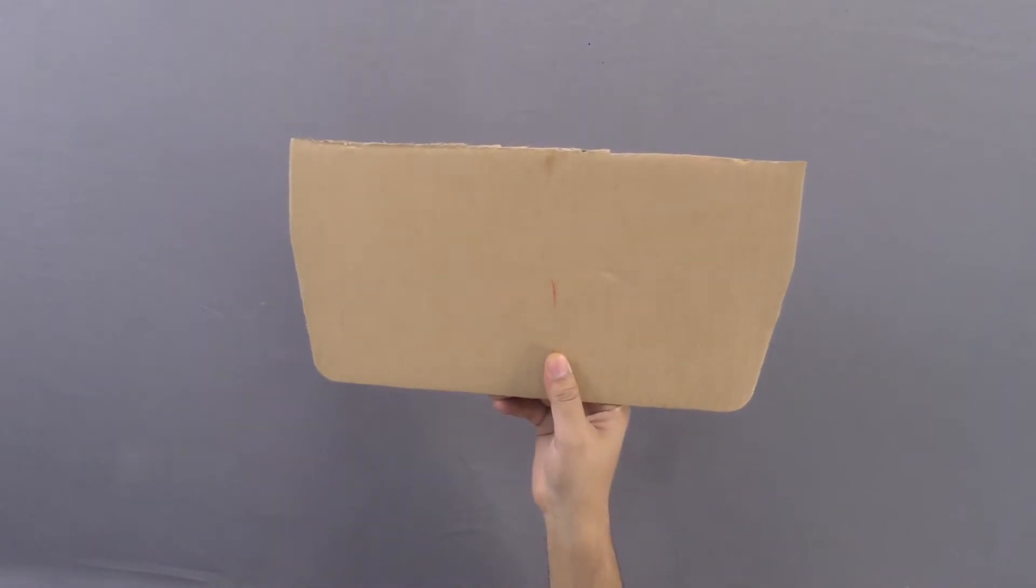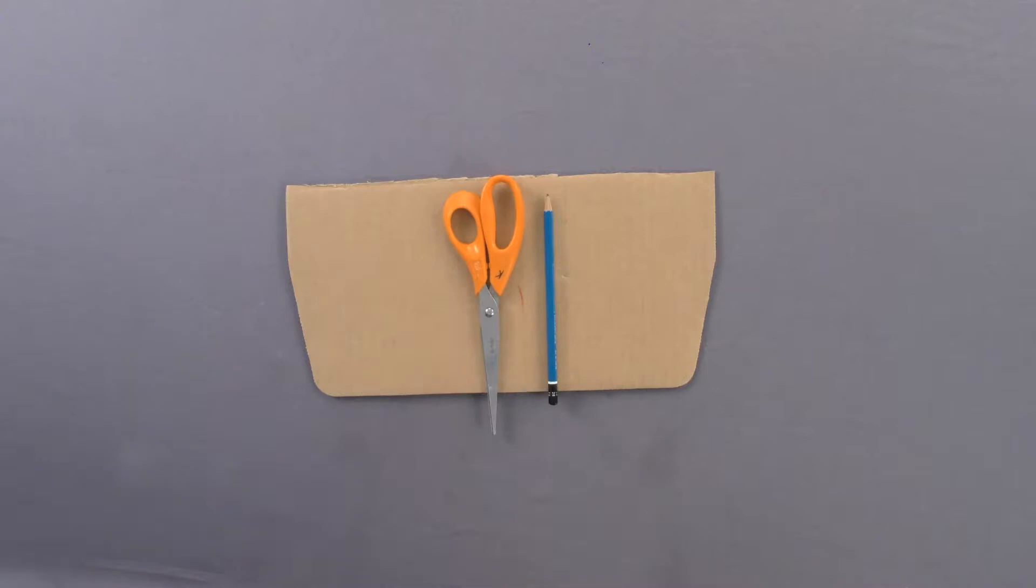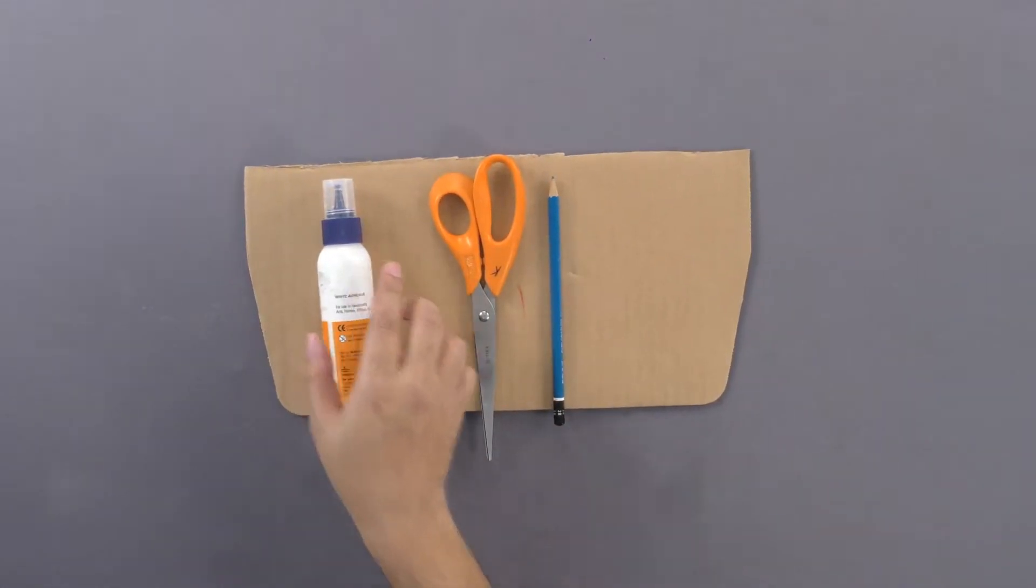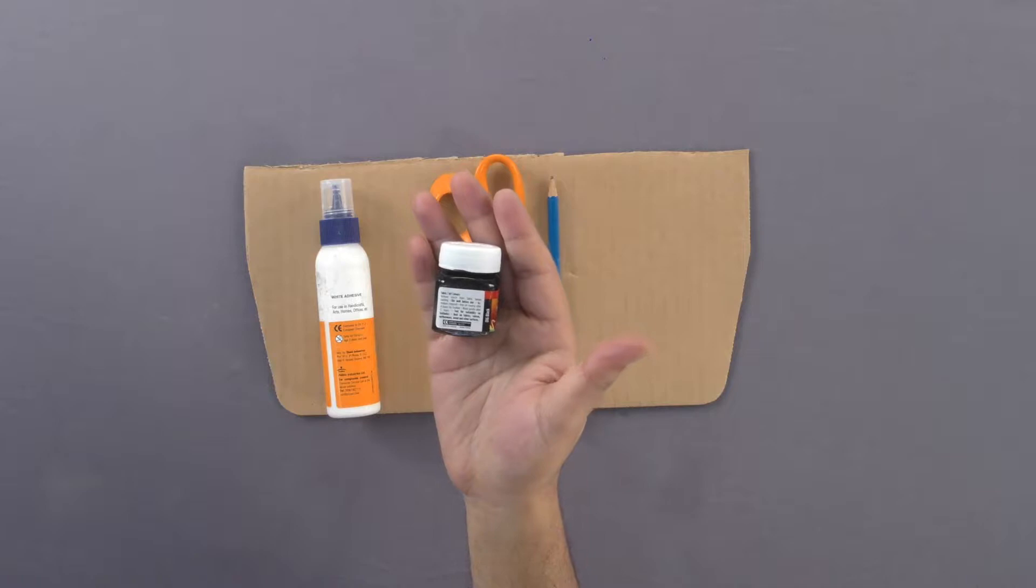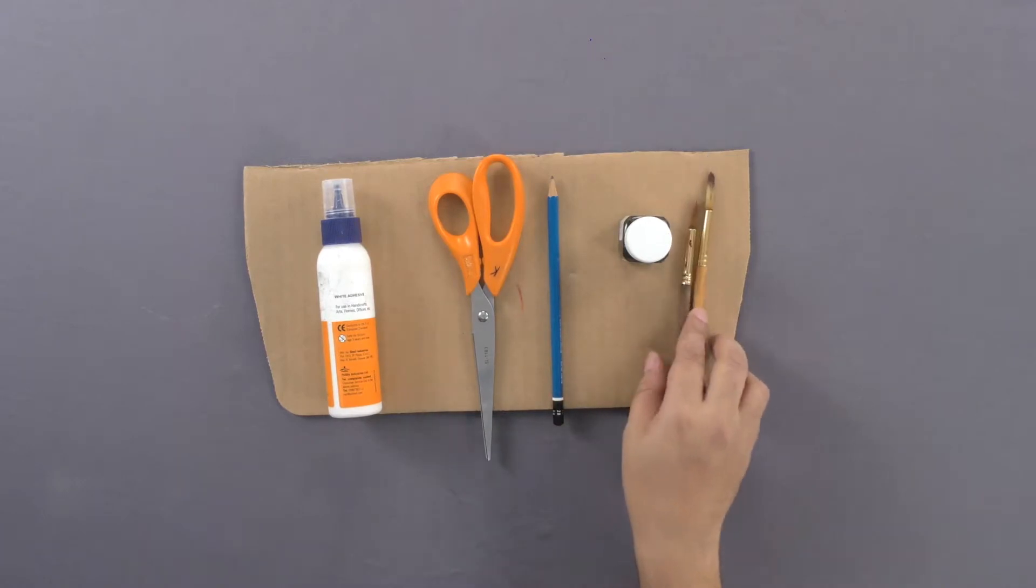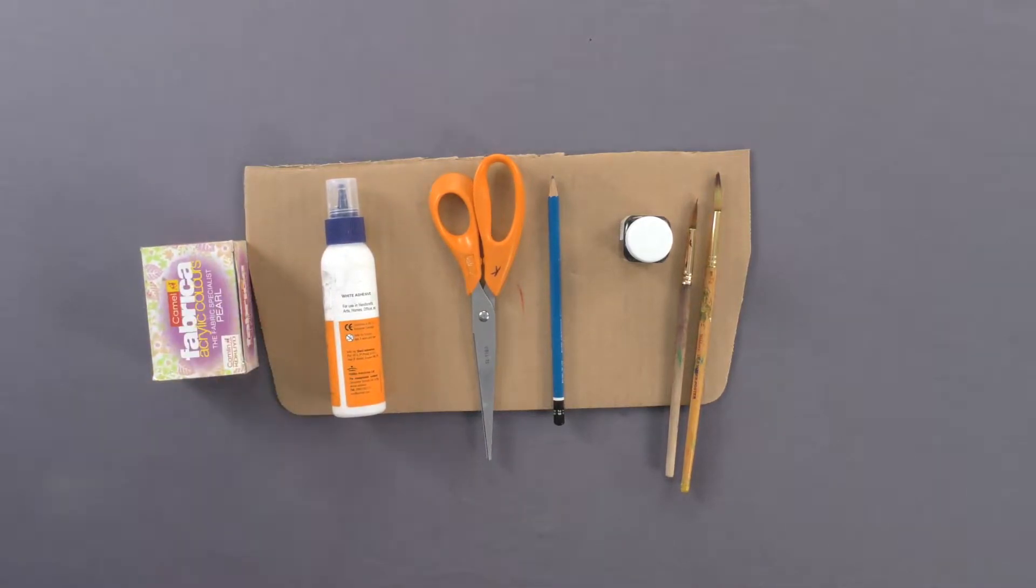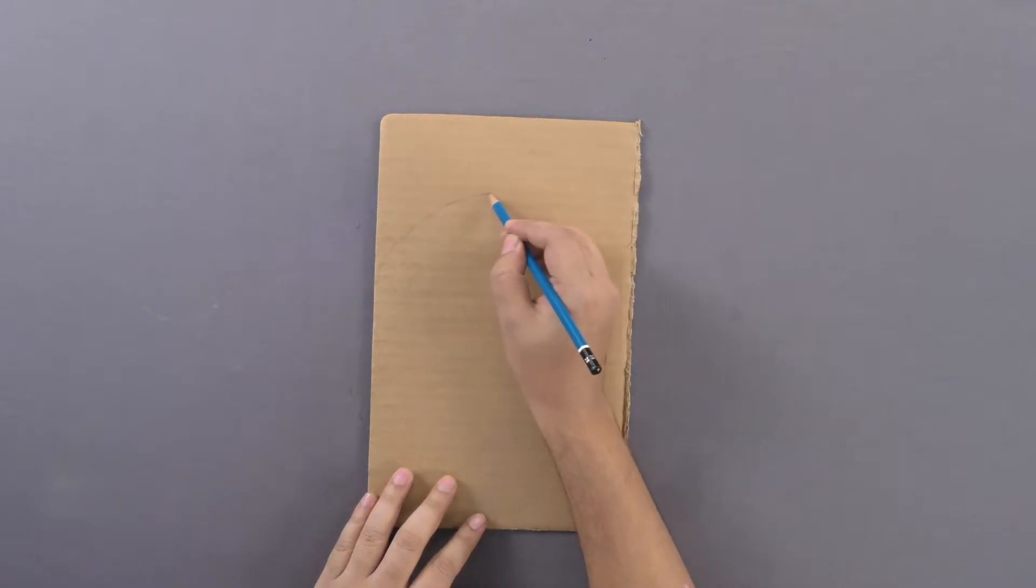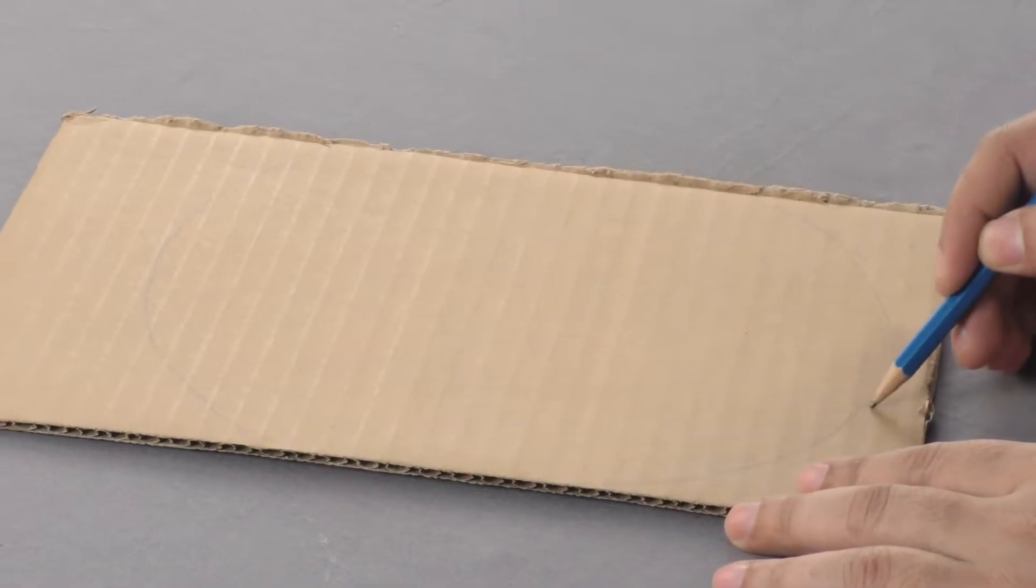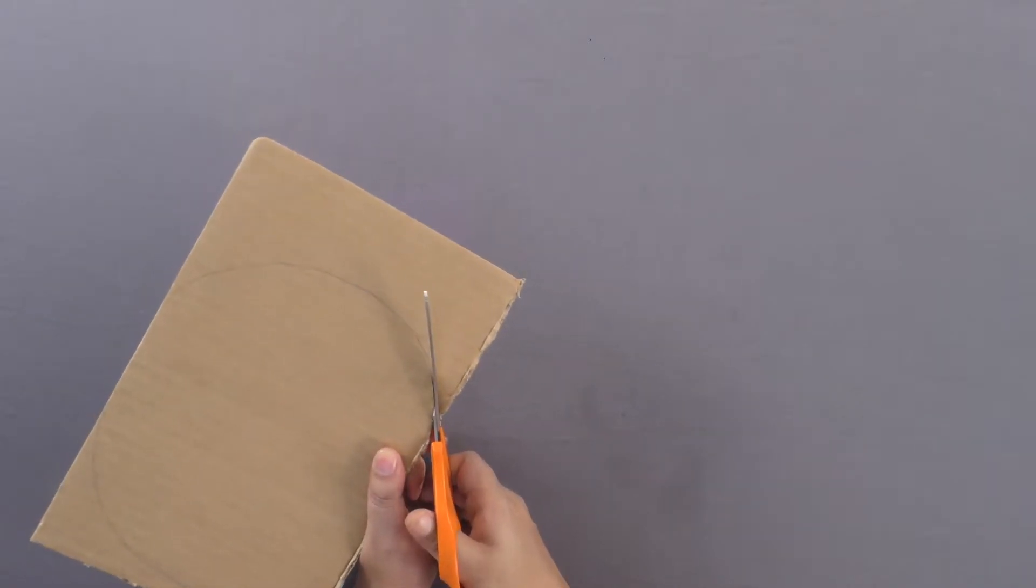Materials required: corrugated carton, pencil, scissors, adhesive, black fabric color, brushes, pearl fabric colors. Take a side of a corrugated carton and draw an oval shape to make a face using a pencil. Now cut out the drawn shape using scissors.